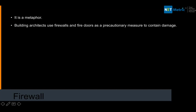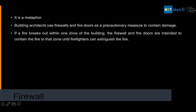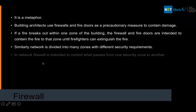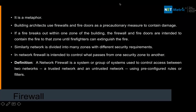A firewall is basically a metaphor. Building architects use firewalls and fire doors as a precautionary measure to contain damage if a fire breaks out within one zone of a building — intended to contain the fire to that zone until firefighters can extinguish it. That's where the name comes from. Similarly, a network is divided into many zones with different security requirements, and the network firewall controls what passes from one security zone to another.